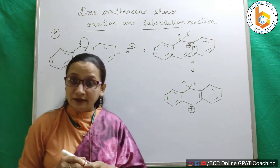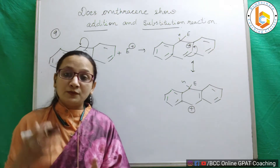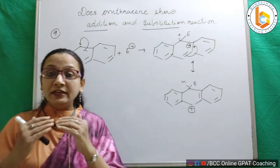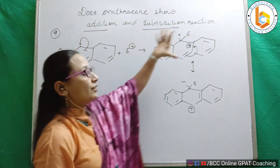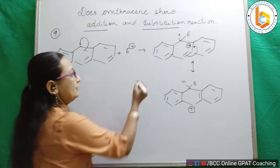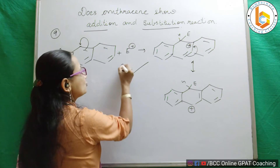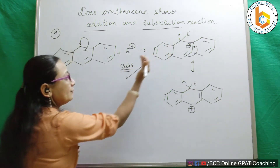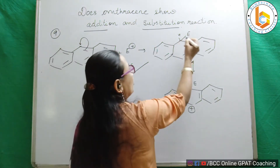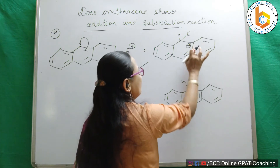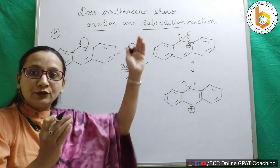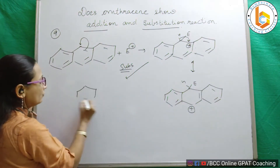Here we are going to make it clear that this attack can lead to substitution also and addition also. See how the substitution reaction will proceed. If the reaction has to be substitution, then it progresses via this resonating form. See the proton — the proton is leaving the system because it is substitution. Electrophile has come and proton will go out of the system.